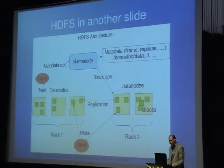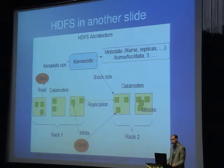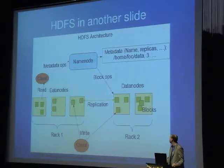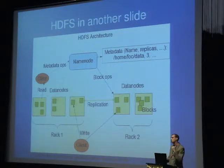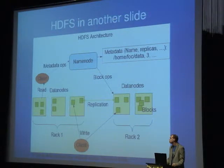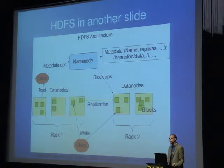Here is the canonical slide from Apache's wiki describing the general flow. When reading, your client pings the name node and asks where the block for home/foo/data is. It says it's on node one, rack one. The client connects to that data node, pulls the bytes, and your application reads them through an input stream. Similarly, when writing, it hits the name node and then writes to blocks on multiple nodes in parallel.